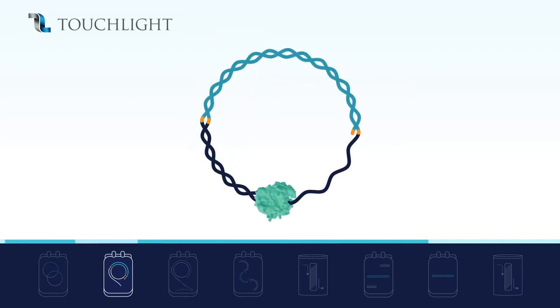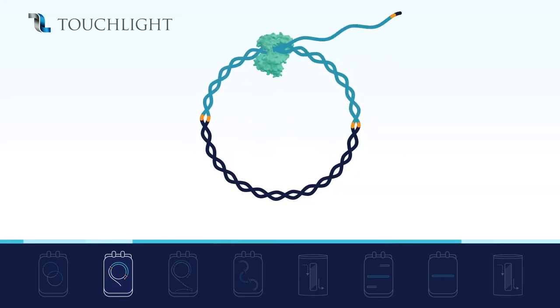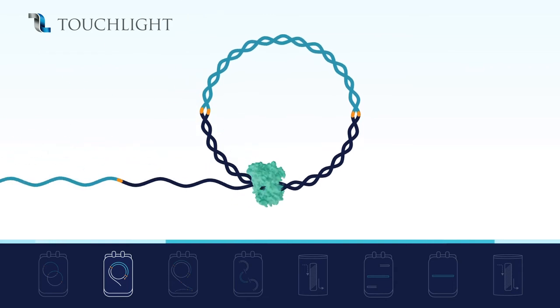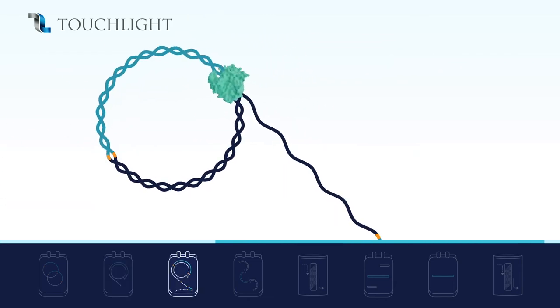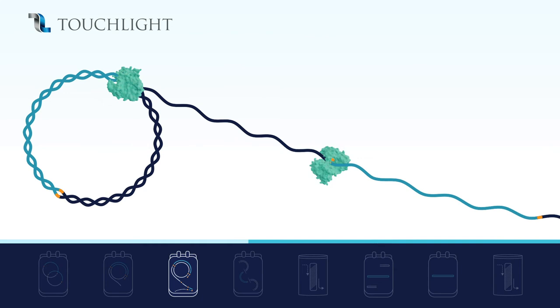First, the polymerase replicates the circular template, producing repeating single-stranded copies of the target sequence. Then, second strand synthesis occurs, whereby the polymerase binds to the emerging single strand to fill in the complementary strand.